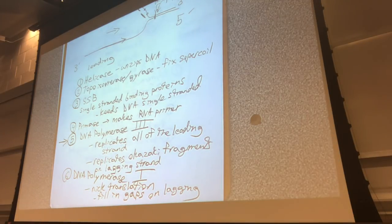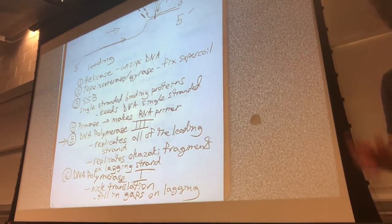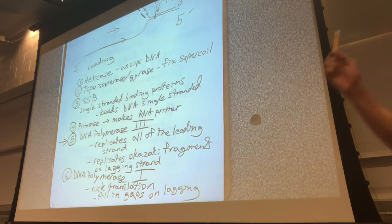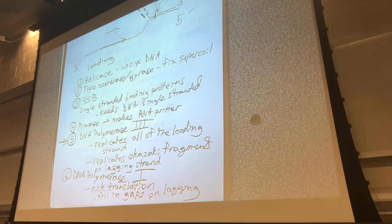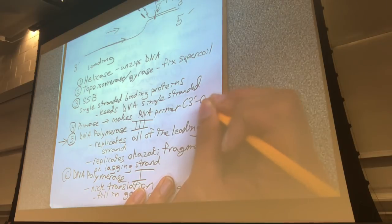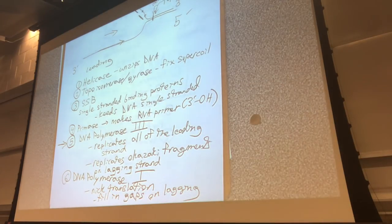Regarding what a primer does: all the RNA primer does is provide a 3' hydroxyl group. DNA polymerase can only make new DNA in a 5' to 3' direction, so it needs to know where to start attaching nucleotides. That's all a primer does — it gives a 3' OH so that DNA polymerase knows where to begin adding nucleotides to.